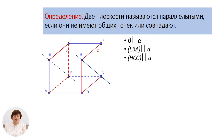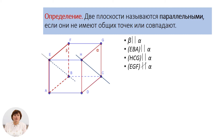Плоскость HCG совпадает с плоскостью α – по определению они параллельны. Плоскость ЕГФ – это плоскость верхнего основания нашего кубоида. Она не параллельна плоскости α, более того, она пересекается с ней по прямой GH.